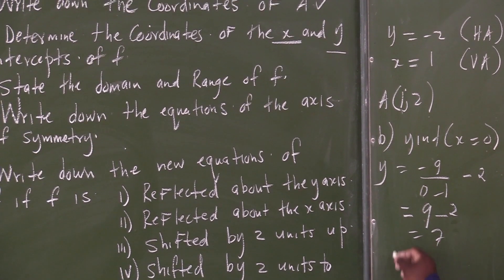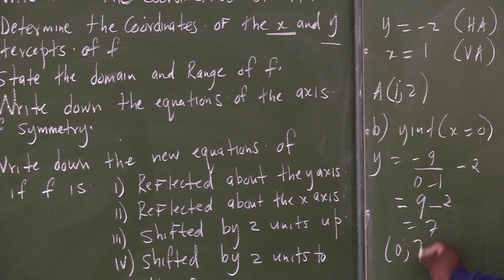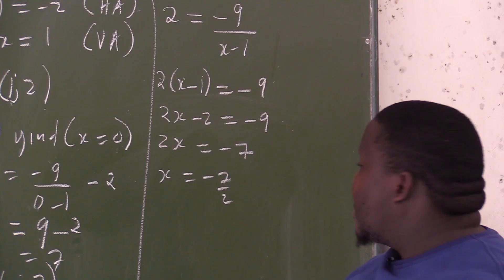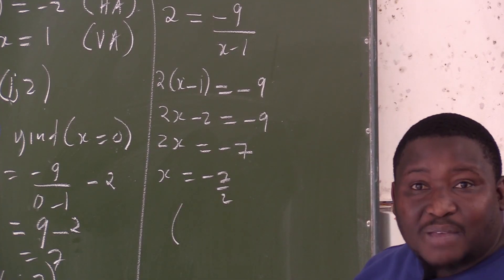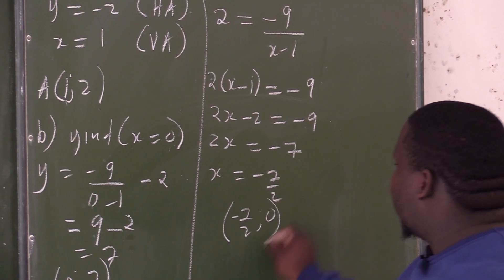So what is my y-intercept as a coordinate? I made x 0 and I obtained the value of y, which was 7. What is your x-intercept now? It will be negative 7 over 2 and 0.